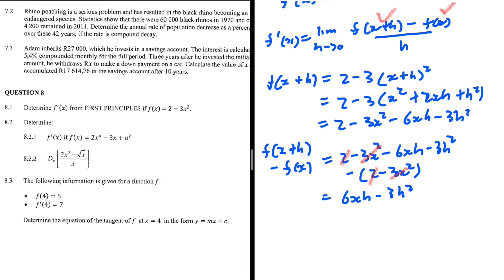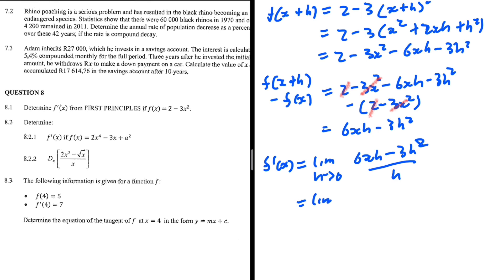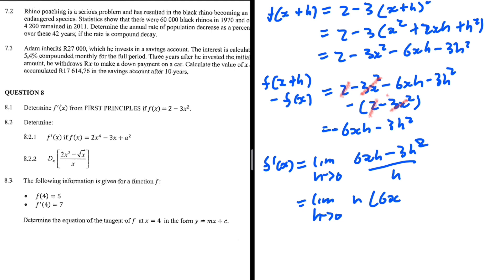Let's substitute back into our equation. So f prime of x, as the limit tends to 0, we have 6xh minus 3h squared, everything divided by h. Let's take h as a common factor in the numerator. Wait — this should be minus, because we have minus 6xh. So when we take the common factor we are left with minus 6x.